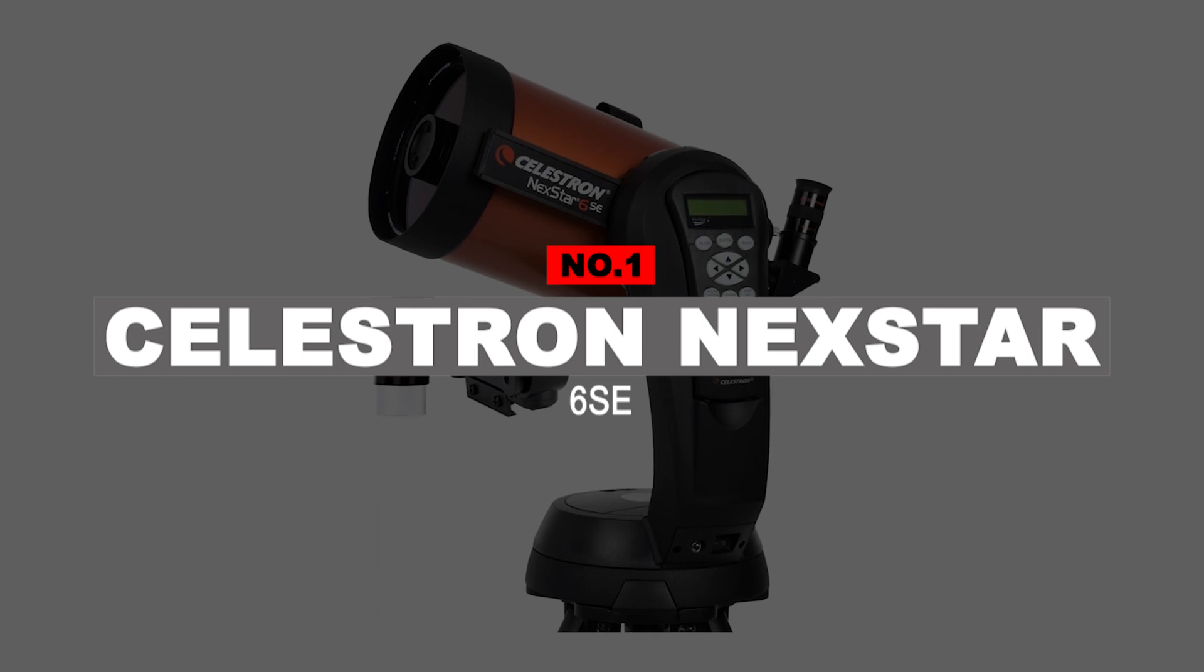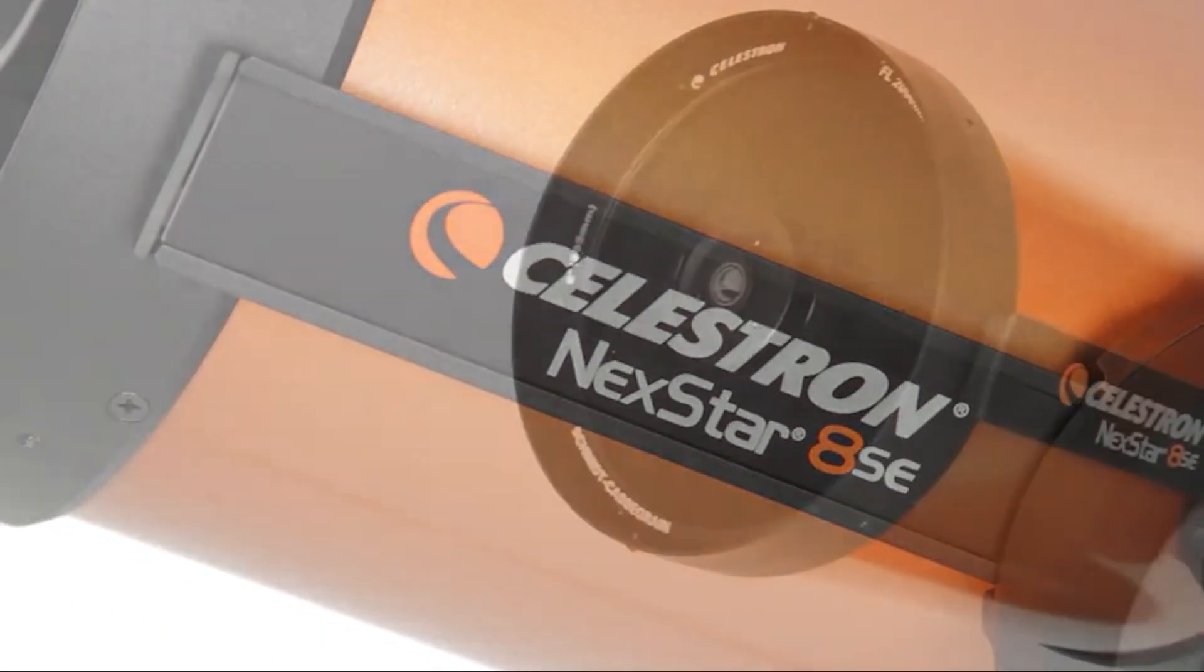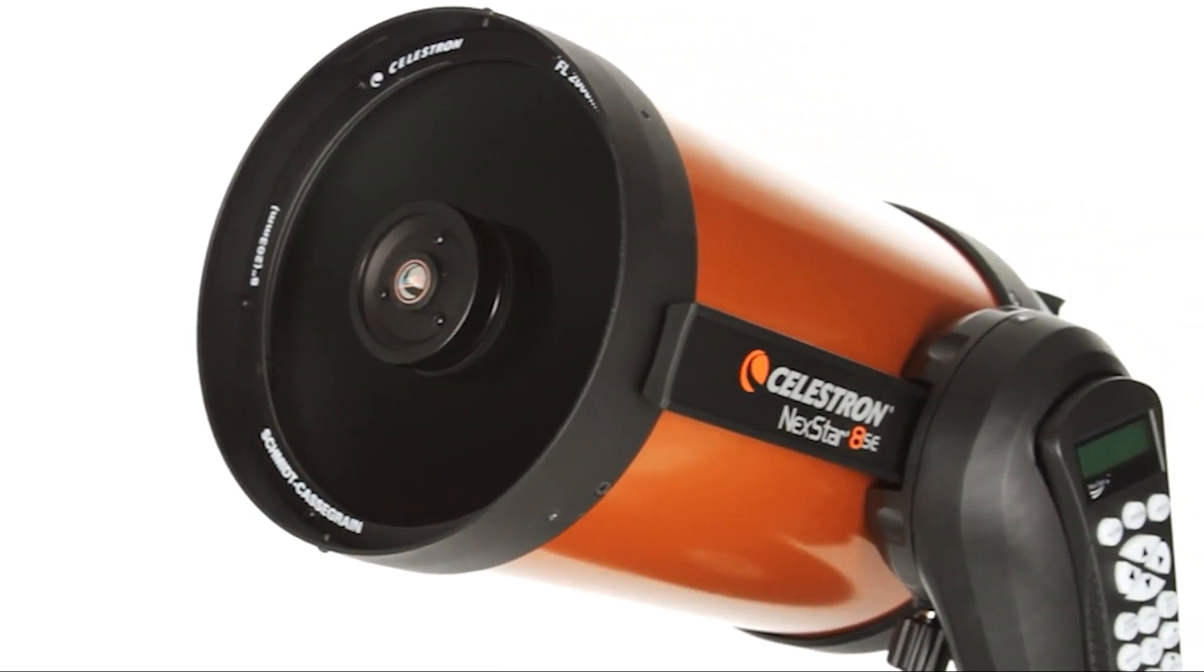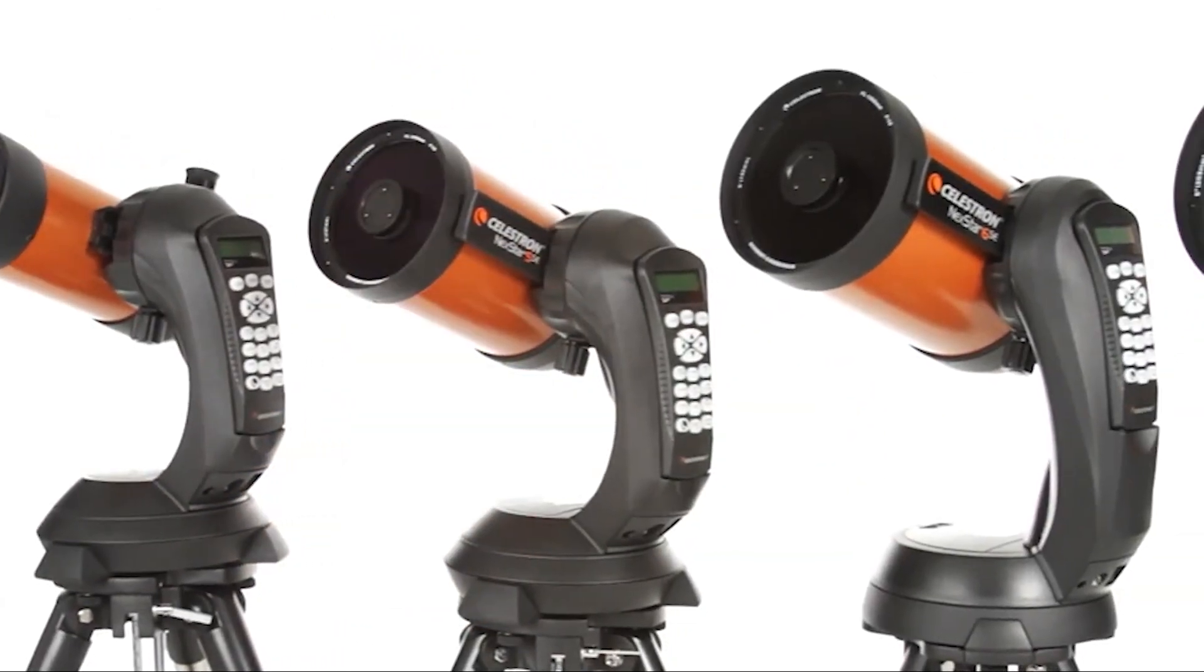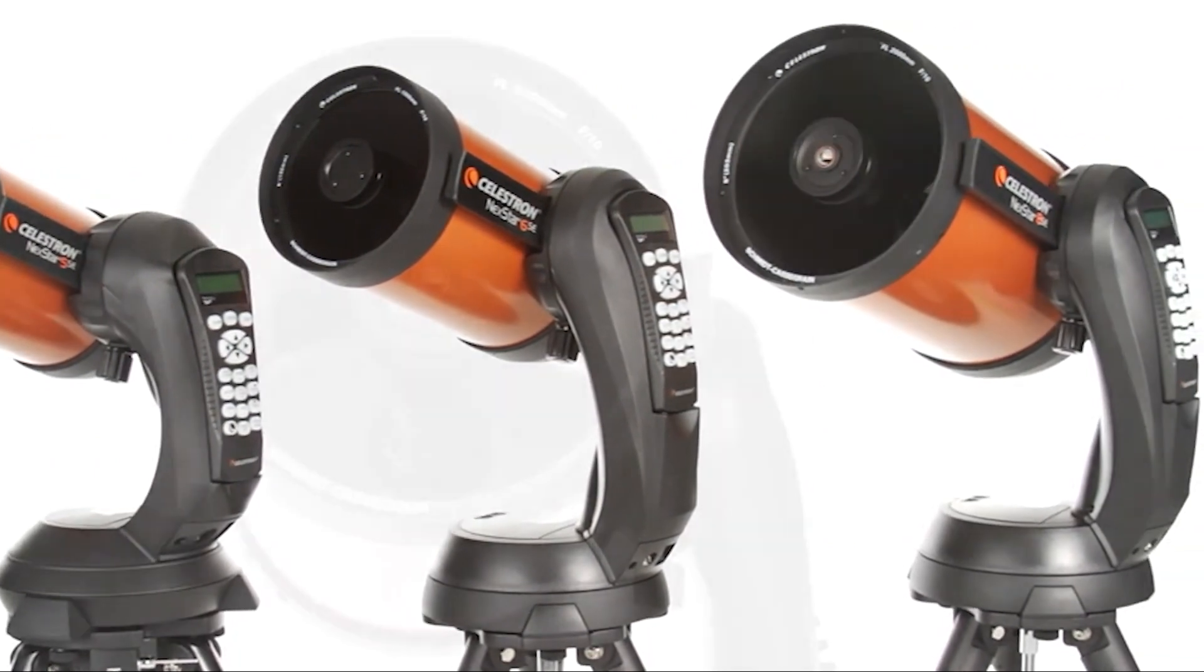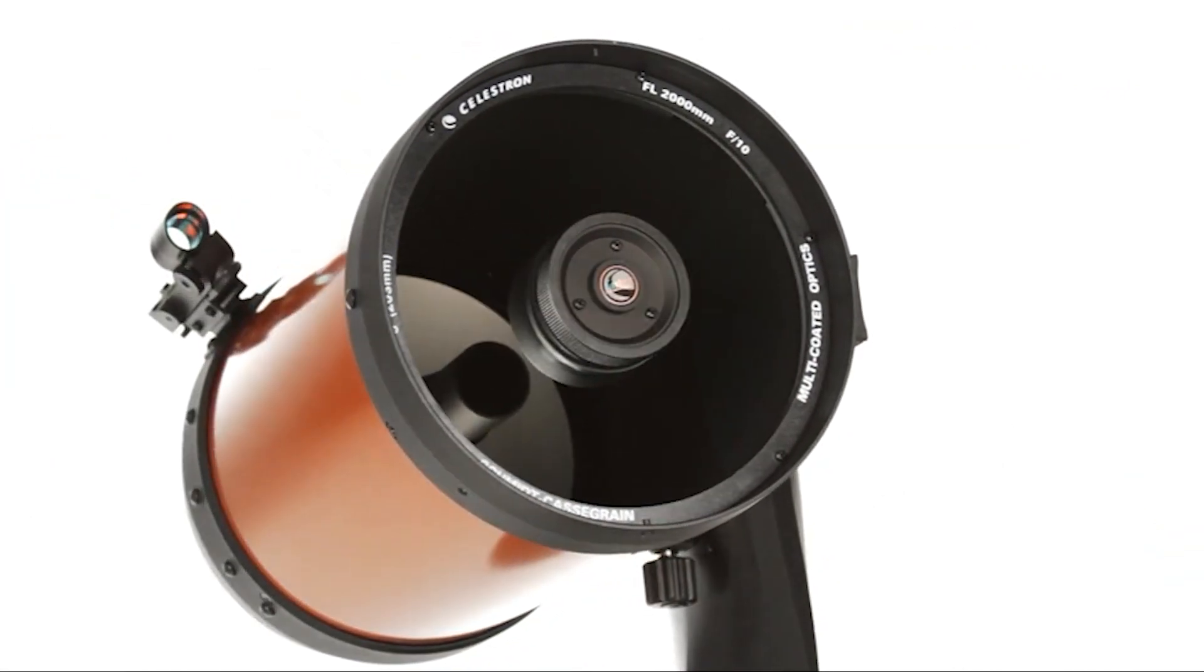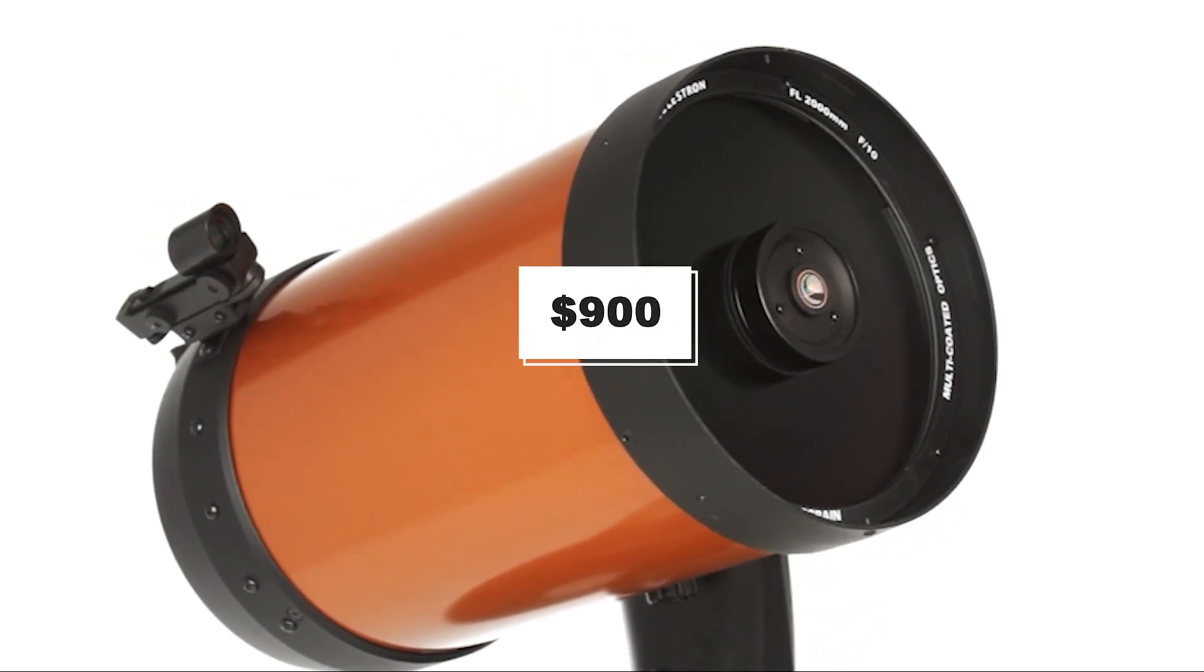Number 1. Celestron Nexstar 6SE. Celestron Nexstar range of catadioptric telescopes is perhaps the most popular on the planet, and the Celestron Nexstar 6SE is the best-selling of all the SE computerized telescopes. The Nexstar 8SE would have taken the best telescope spot in our personal category if it were not for Celestron's superior, bigger, and more expensive CPC-1100. The 6SE certainly deserves top spot in our list, even given its almost $900 price tag.